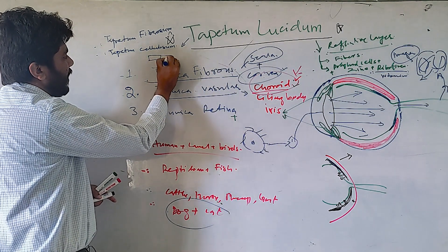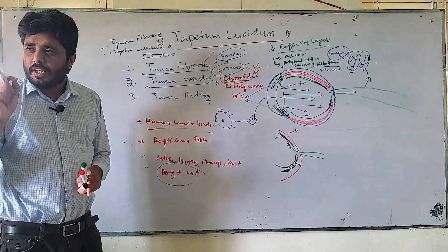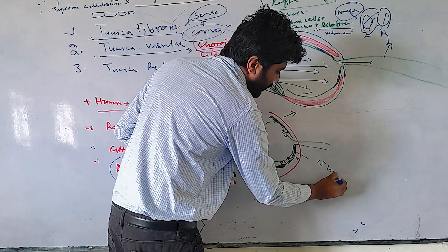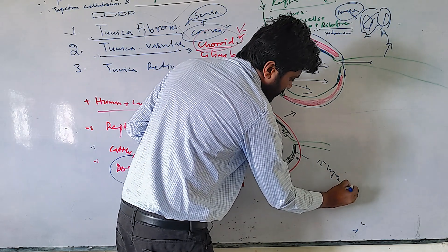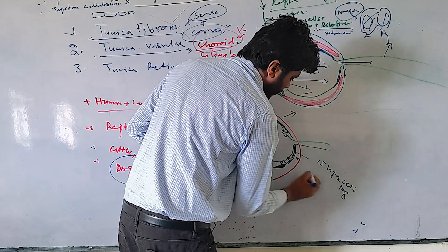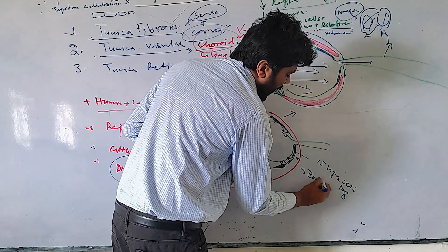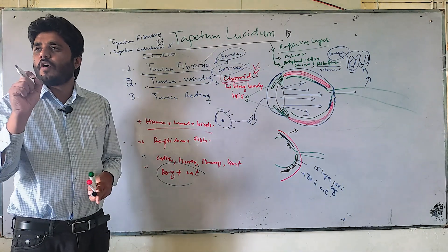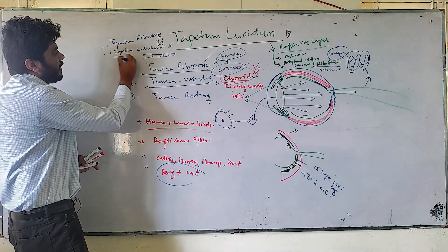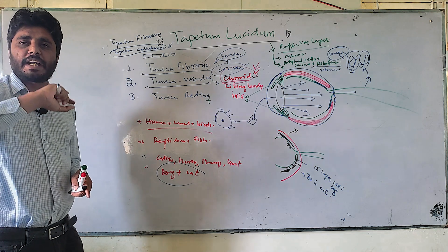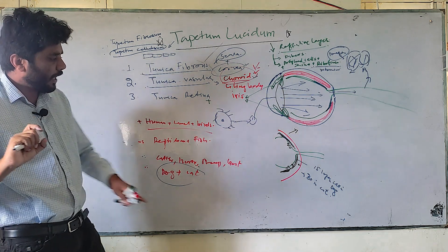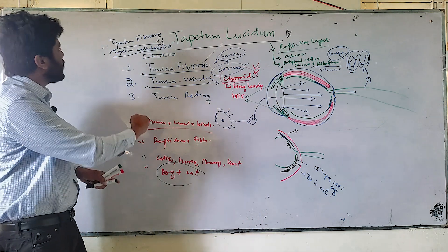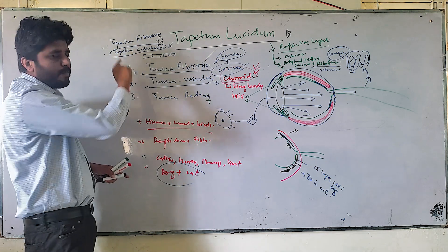In the case of the dog, under the microscope you will find up to 15 layers of cells, and in cat up to 30 layers of cells. So in carnivores we have tapetum cellulosum — polyhedral cells making 15 to 30 layers behind the retina. In herbivores, this tapetum lucidum is tapetum fibrosum, having many layers of fibers.